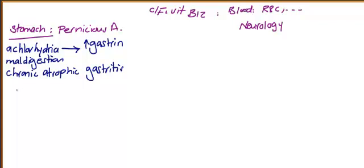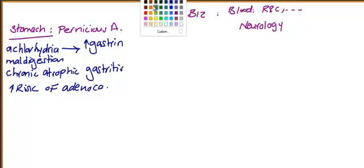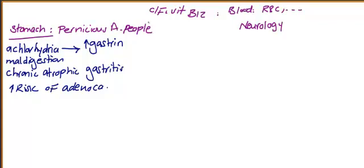In pernicious anemia, this also leads to chronic atrophic gastritis, and finally an increased risk of adenocarcinoma. Keep in mind these are the clinical features of pernicious anemia patients, which apply when pernicious anemia is the cause of vitamin B12 deficiency.